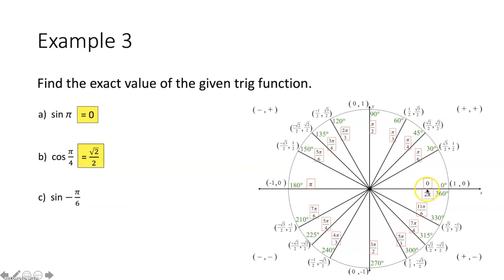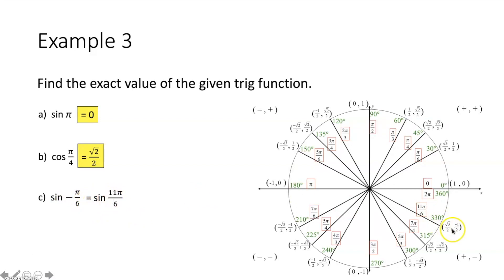Part c, evaluate sine of negative π over 6. There are no negative radian measures on the unit circle. Remember: if you rotate your terminal side counterclockwise you get positive angle measures, but rotating clockwise gives negative angle measures. So instead of rotating counterclockwise π over 6 radians (30 degrees), we rotate clockwise negative π over 6, and we end up at 11π over 6. Those are coterminal angles, meaning negative π over 6 radians is equivalent to 11π over 6 radians. Sine of 11π over 6 equals the y-coordinate of that point, which is negative 1 half.